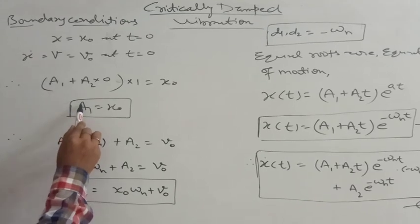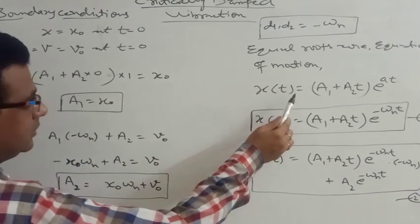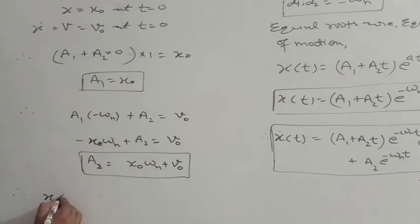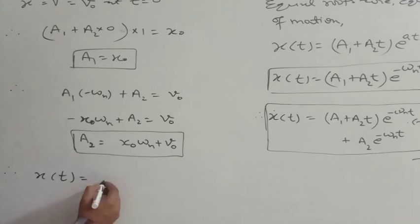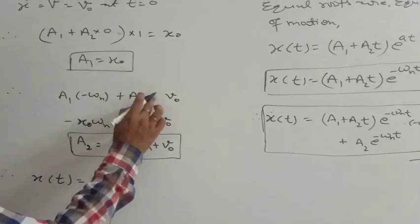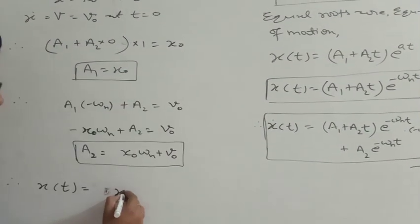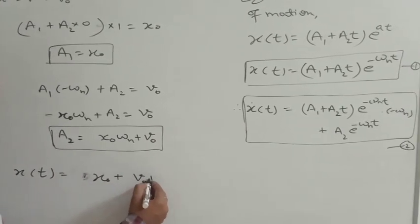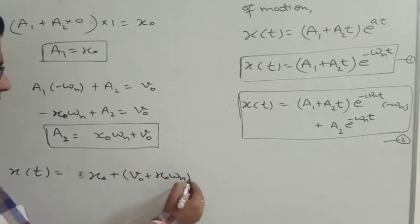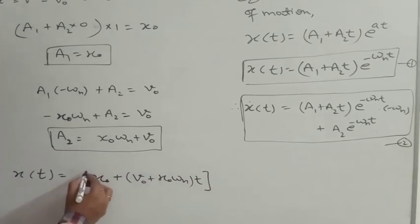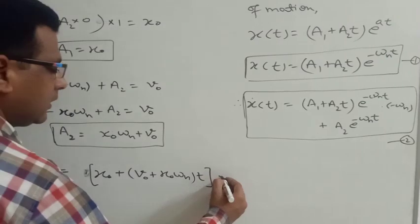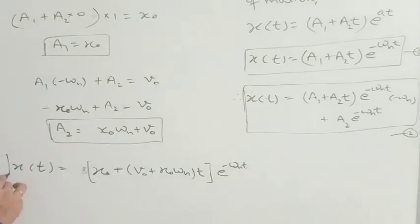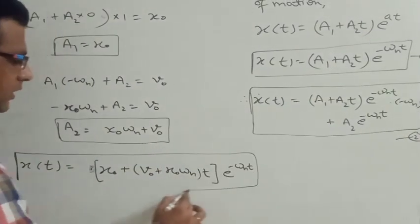Now substituting the values of constants a1 and a2 into the equation of motion. The final equation of motion for the critically damped system is: x = [x0 + (v0 + x0·omega_n)·t] · e^(−omega_n·t). This is the complete final equation of motion for the critically damped system.